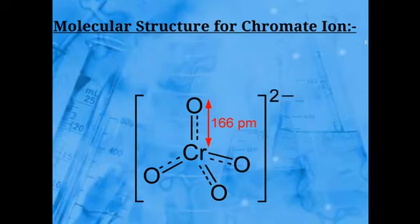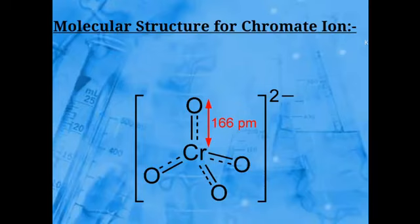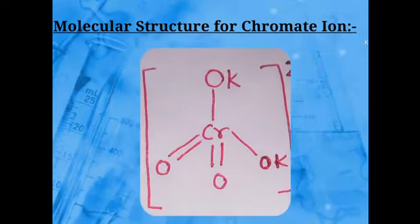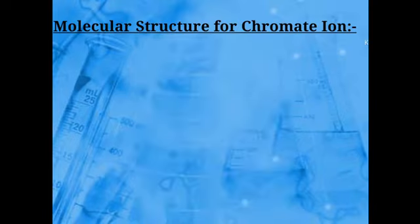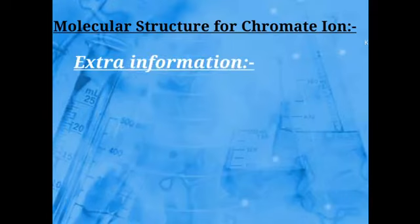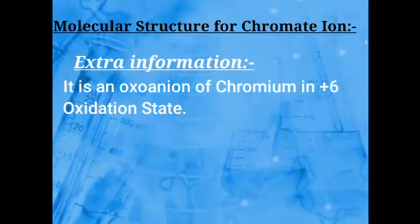Regarding its structure: 2 oxygen atoms are connected by double bonds and 2 remaining oxygen atoms are connected by single bonds, but the double bond is delocalized over all 4 oxygen atoms. The bond length between oxygen atoms in the chromate ion is 166 picometers. When the complete potassium chromate molecule is formed, 2 oxygen atoms become fixed with double bonds and 2 with single bonds, and the 2 potassium ions attach to the single-bond oxygen atoms. This ion is called the oxo anion of chromium.